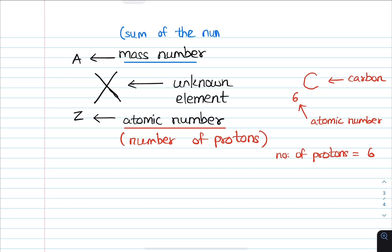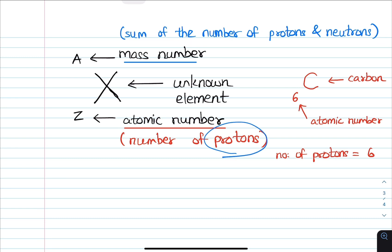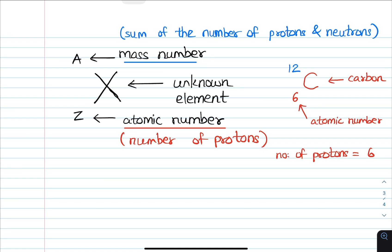The mass number is the sum of the number of protons and neutrons. Protons and neutrons can be found in the mass number. The mass number is the number of protons and neutrons combined. Mass number is very similar to — write and form the proton and neutron.